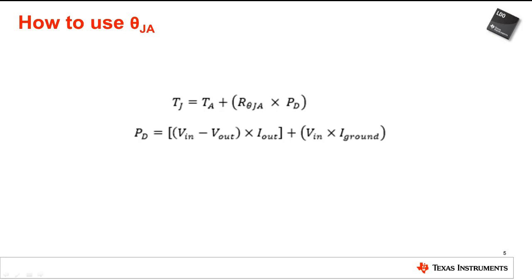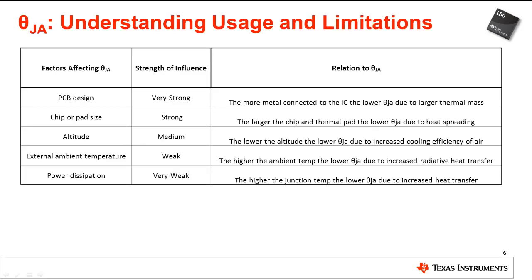Although theta JA is one of the most useful metrics, there are also some limitations. One limitation of theta JA is it is a measure of thermal performance of an IC mounted on the JEDEC PCB. This means the number would only apply to a specific board layout. The reason that theta JA is still so commonly used is that ambient temperature is one of the only parameters that system designers have access to. When dealing with LDOs, you're not able to assume that the board temperature is the same as the ambient temperature because the LDO is dissipating power causing the board temperature to rise.